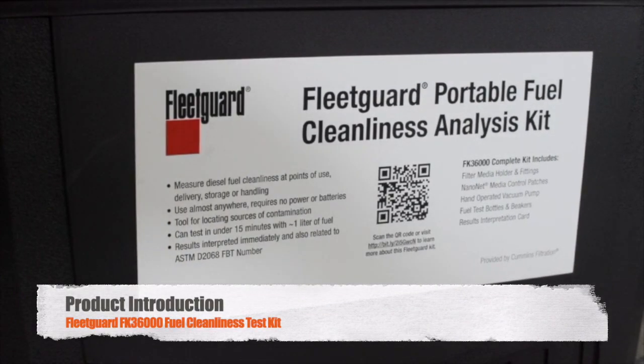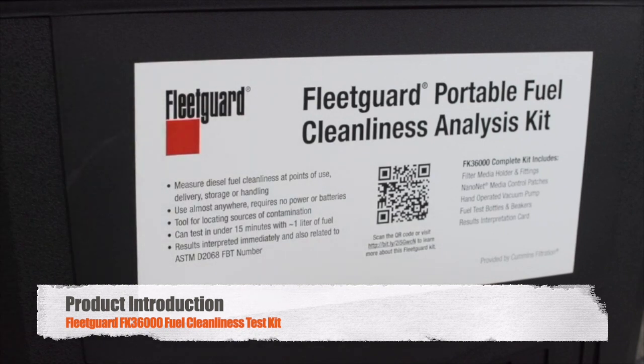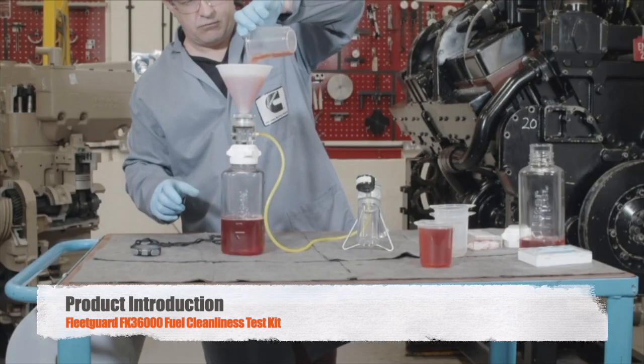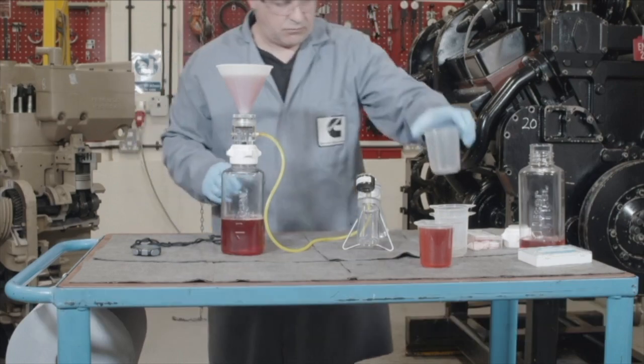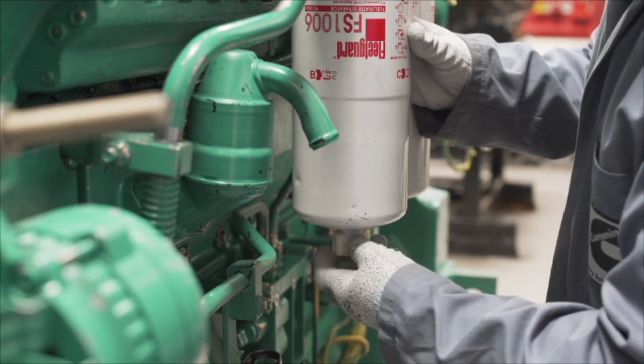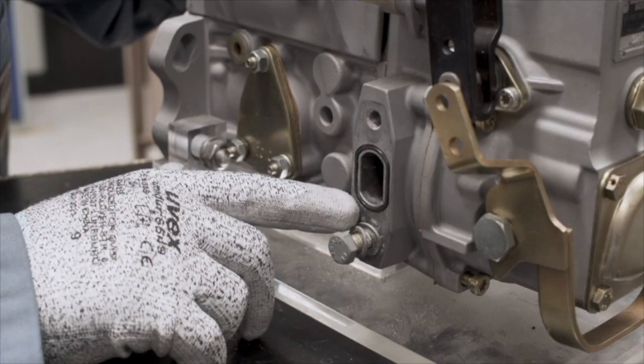The FleetGuard FK36000 is a simple, portable method for testing fuel cleanliness that provides users with the ability to quickly analyze the quality of their fuel. It can be used for troubleshooting or periodic inspection of fuel quality at all points in the system.